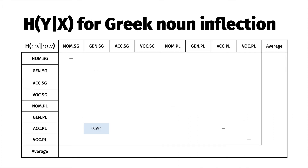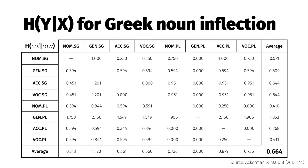Next, we calculate the conditional entropies for every other paradigm cell combination. Averaging over all of those values yields a mean conditional entropy of about 0.66 bits. That means, on average, predicting an unknown inflected form of a Greek noun given previous knowledge of some other form is about as difficult as choosing between roughly 1.6 equally likely options.